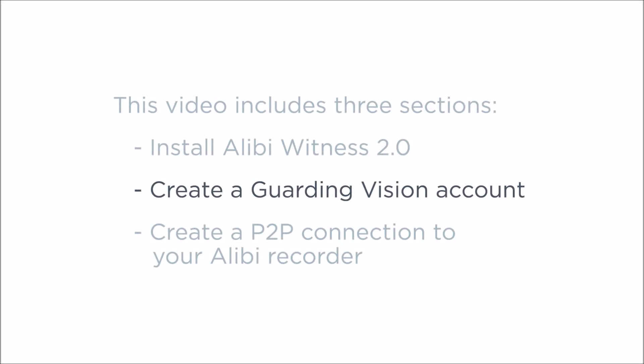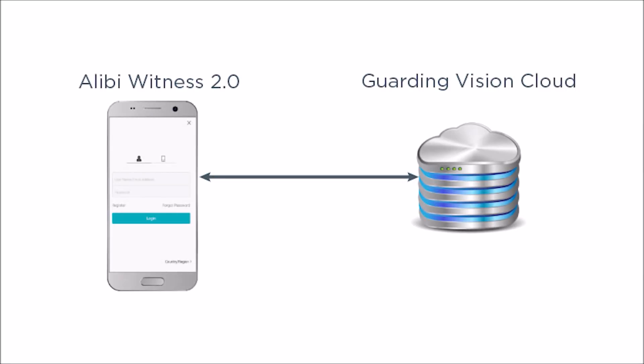Section 2: Create a Guarding Vision account. The Guarding Vision service is provided free by Alibi Security, but to use it, you must first create an account. Then you can add devices to Alibi Witness for mobile monitoring.